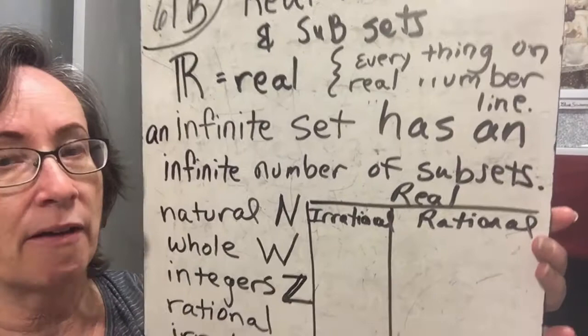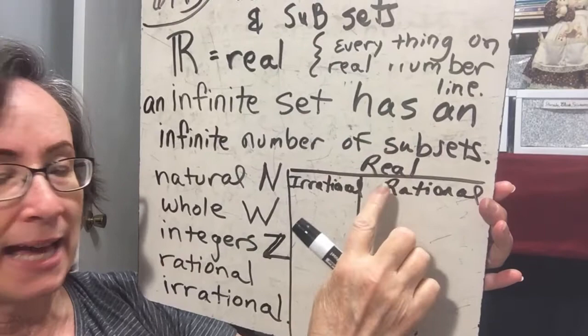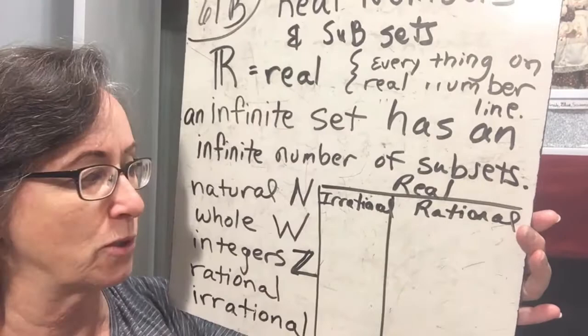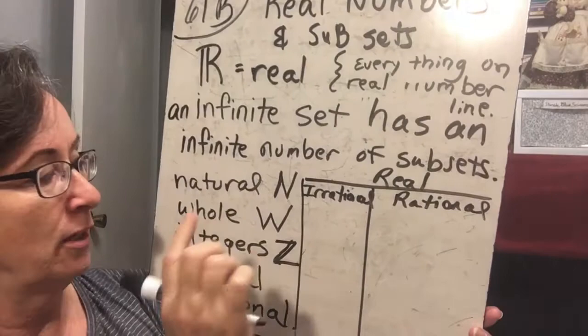We're only going to learn about five subsets of the real number system: natural numbers, whole numbers, integers, rational, and irrational. The real number set can be divided into irrational and rational numbers, and these other sets fall inside those.